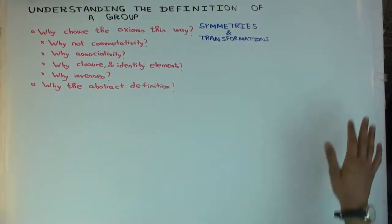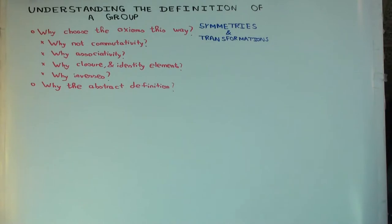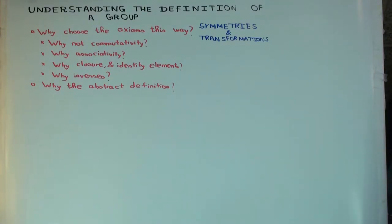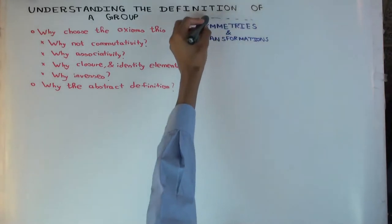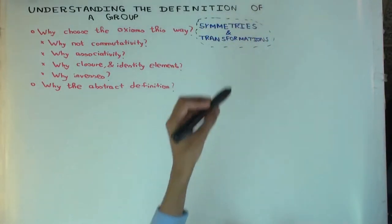In this talk I'm going to describe basically what groups are for and why you choose axioms the way you do. So the main thing to understand is that groups — we've seen examples like the integers, the rationals, the reals, and those are all examples of abelian groups. We haven't really seen examples of non-abelian groups. The main reason for groups is that they describe the symmetries and the transformations of various structures.